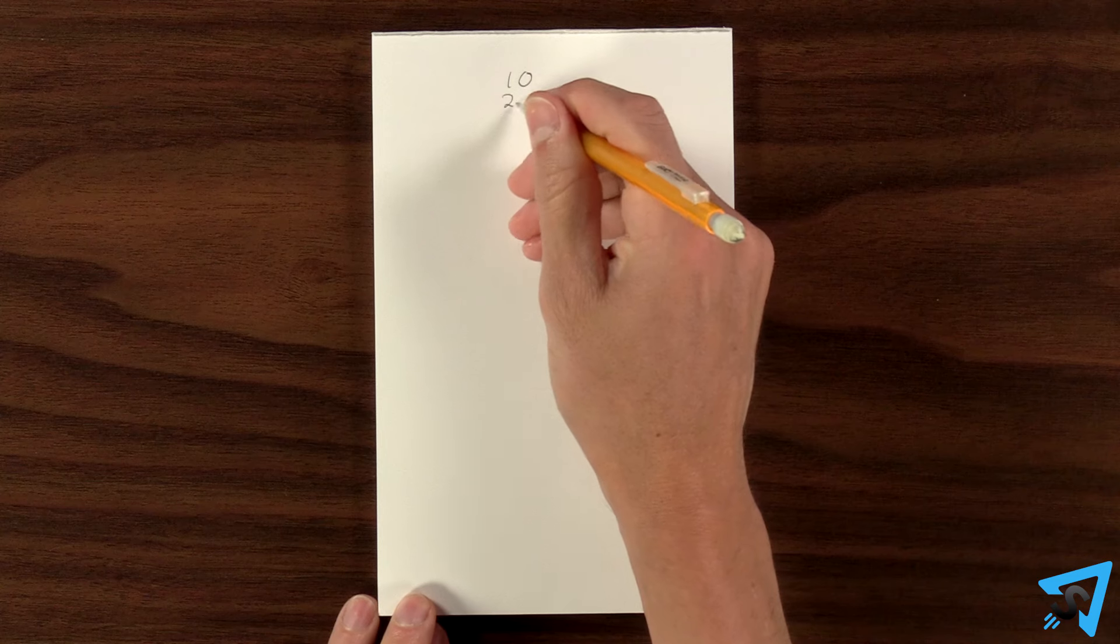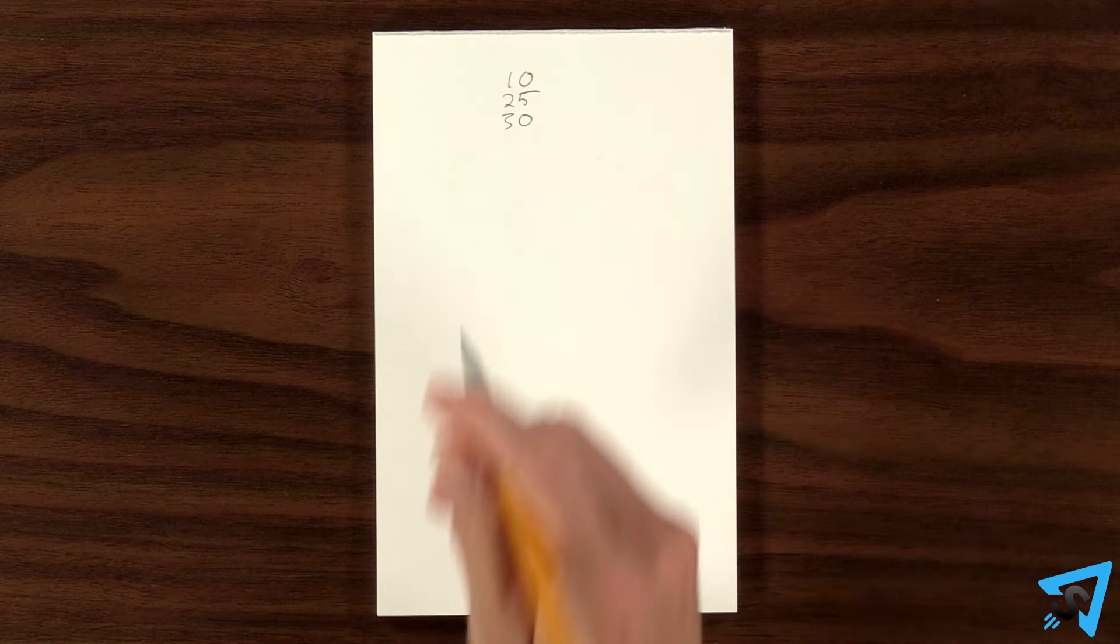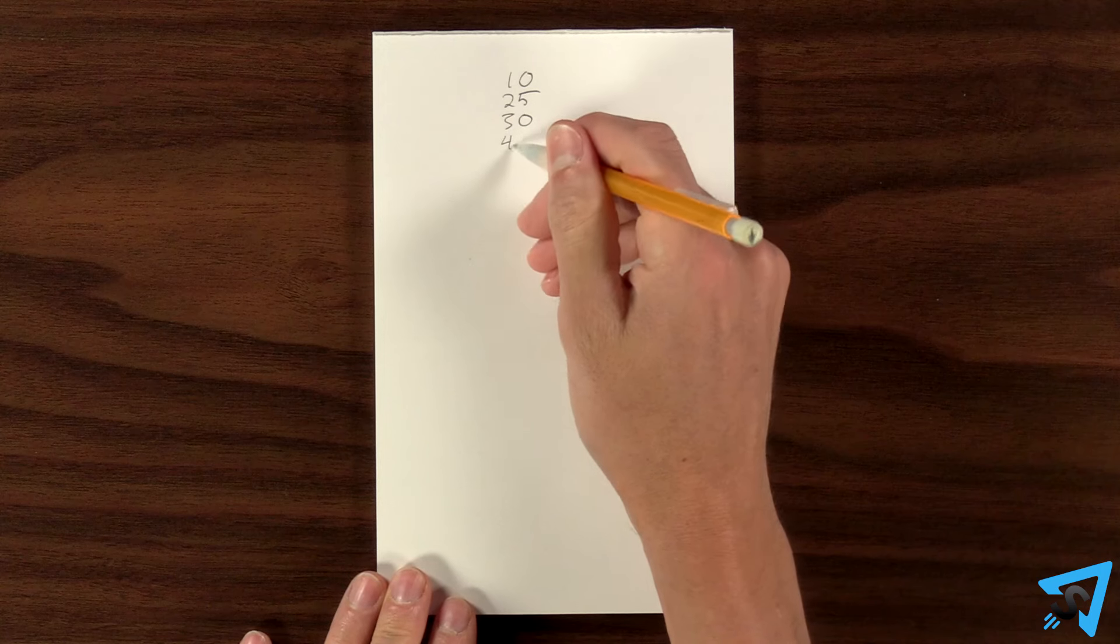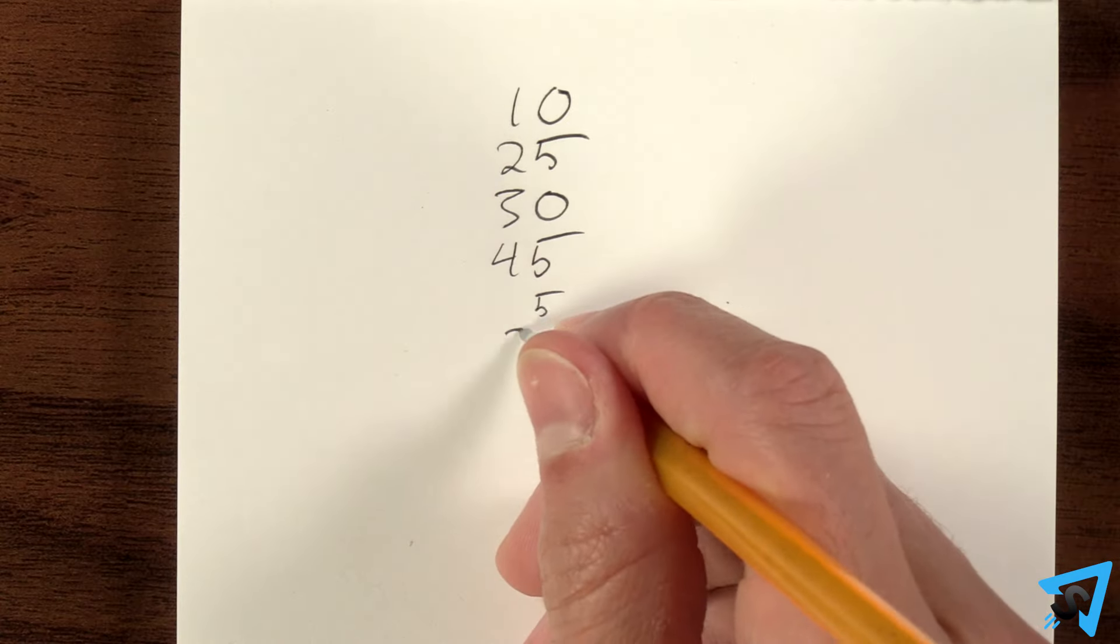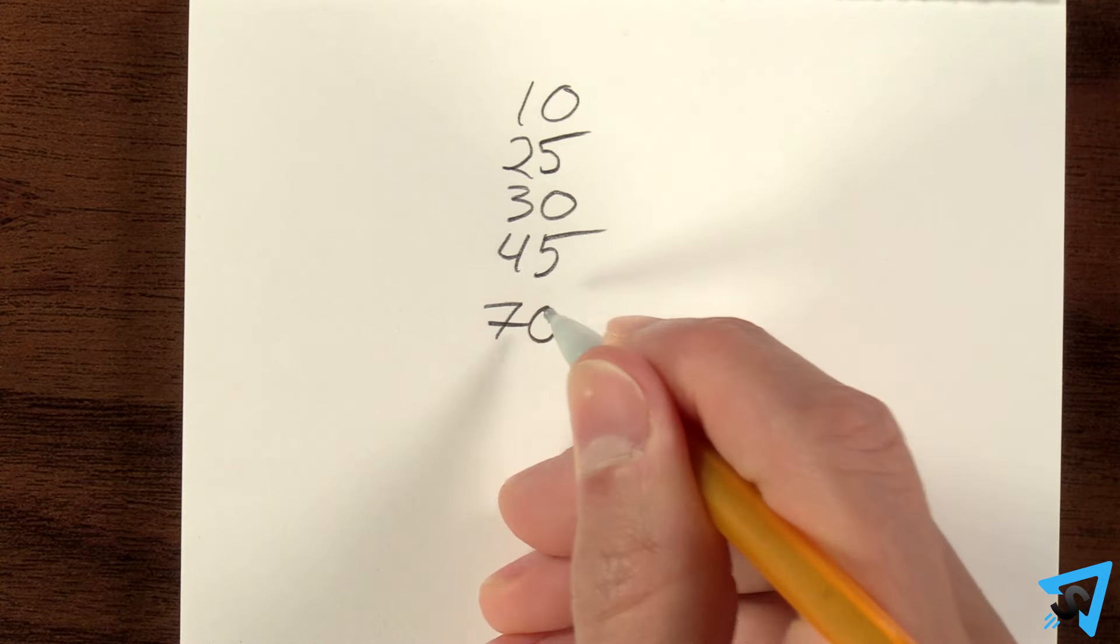When scoring, each player records their own score by mentally adding the new points to their existing score and writing down the new total. Don't write down each individual score before calculating, just write the new total score.